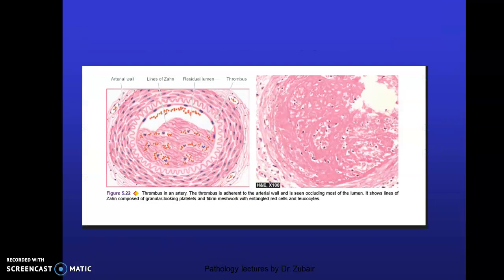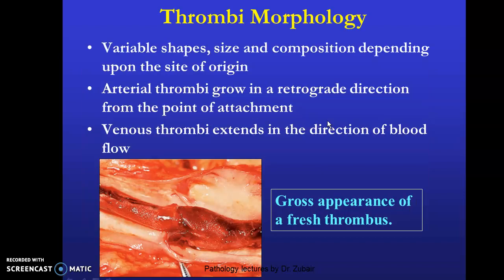When a thrombus forms, it is adherent to the arterial wall and occludes most of the lumen. What you find are lines of Zahn, composed of platelets and fibrin meshwork with entangled red cells and leukocytes. Regarding thrombus morphology, it comprises variable shapes and sizes, and its composition depends upon the site of origin.